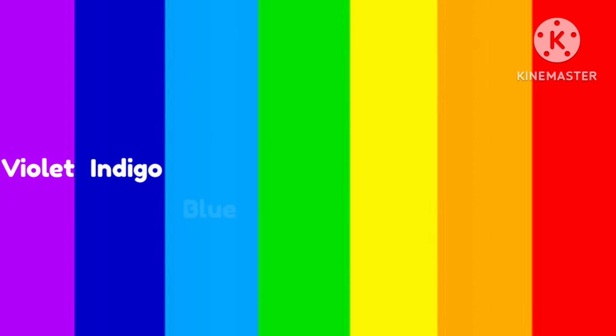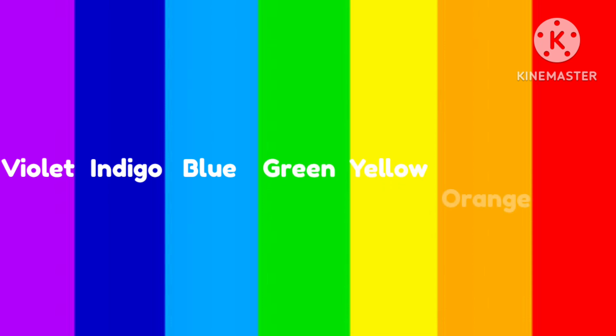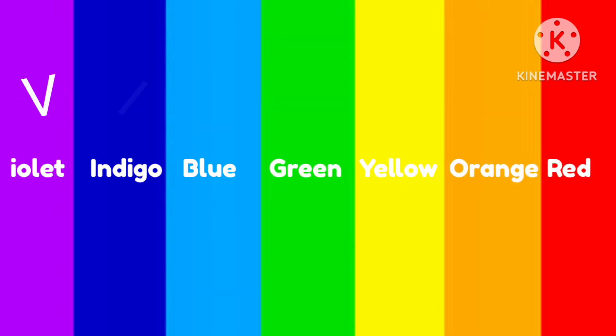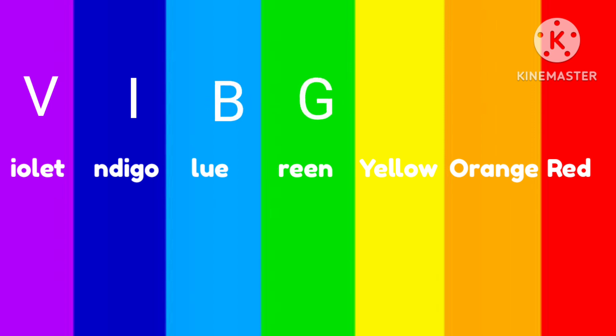Now let's see what these different colors are. Violet, indigo, blue, green, yellow, orange, and red. This sequence of seven colors is also known as VIBGYOR.